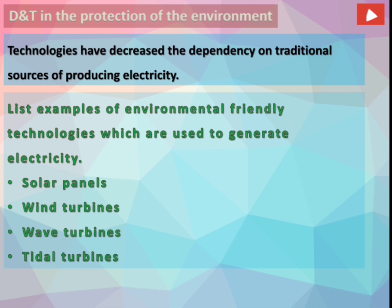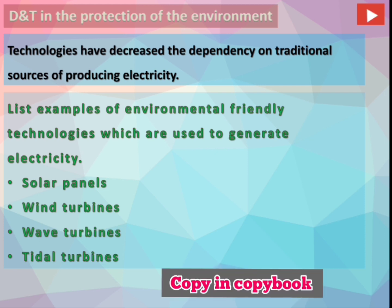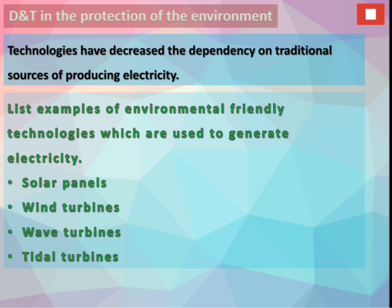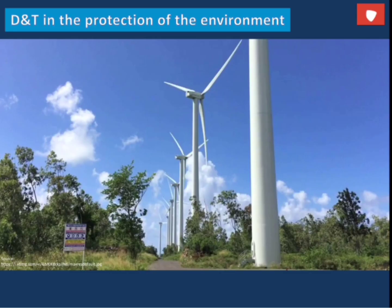Design and technology in the protection of the environment: technologies have decreased our dependency on traditional sources of producing electricity. Traditional sources such as bagasse, coal, or heavy oil contribute to the greenhouse effect, which is not good for the environment. Examples of environmentally friendly technologies used to generate electricity include solar panels, wind and wave turbines, and tidal turbines. We have solar panels in many households and a wind farm at Rochenoir.